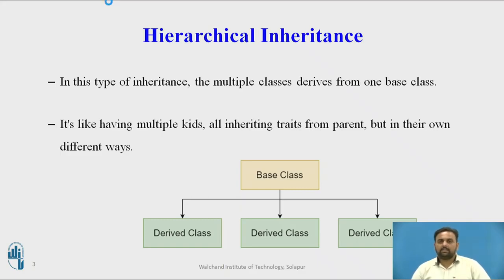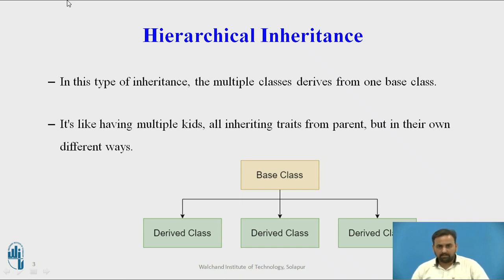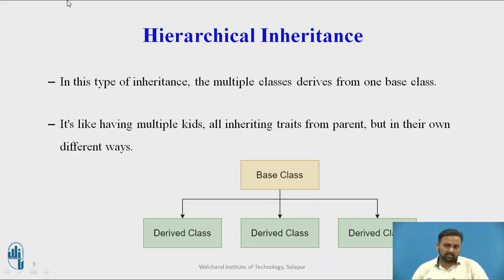Hierarchical Inheritance is one type of inheritance where multiple classes are derived from one common base class. It means there is only one parent and multiple child classes. It is like having multiple kids — the same father having more than one child. All child classes inherit traits from the parent but in their own different ways, because one child may be a son and another a daughter. They are derived from a single base class but their behavior may be different.